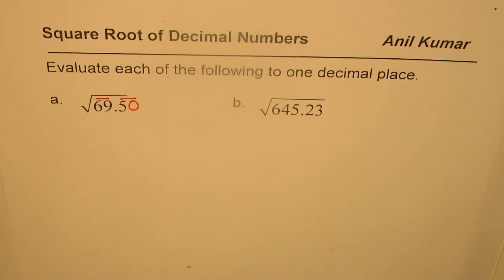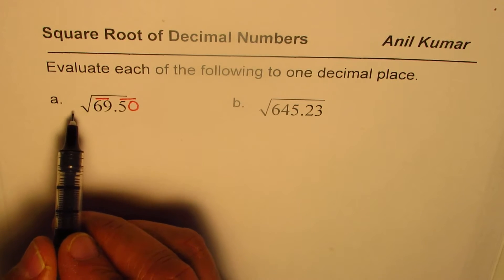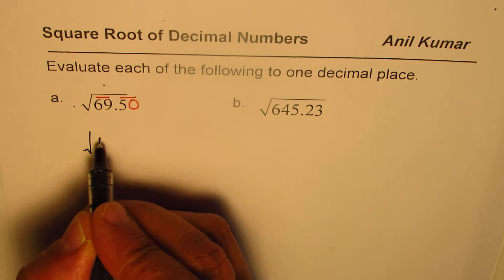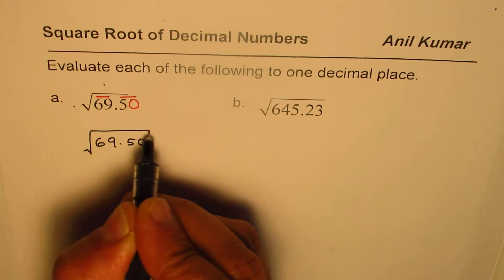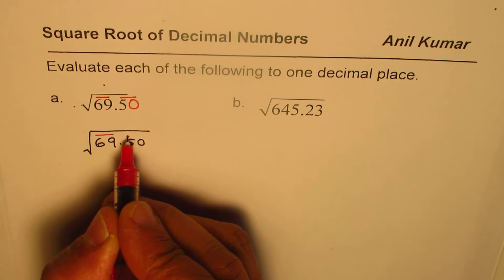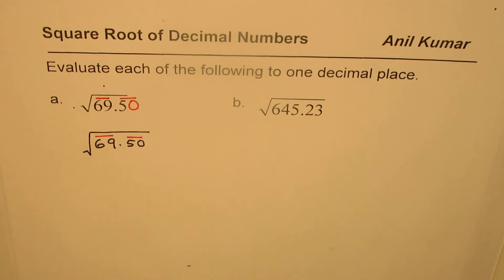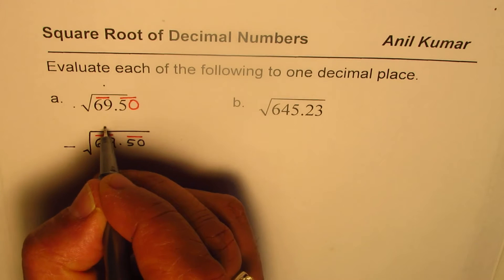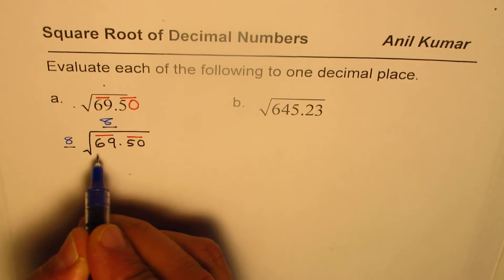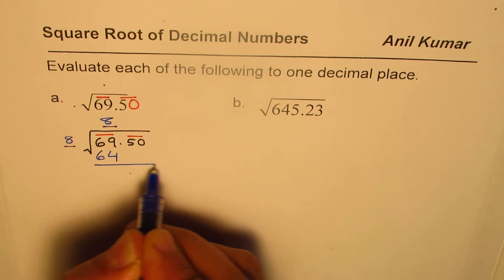Now we will start our repeated division. It's a special kind of division. We have 69.50. We write a number here and the same number on top. What is the maximum number I can place? It is definitely 8 — 8 times 8 is 64. So I write 8 times 8 equals 64.